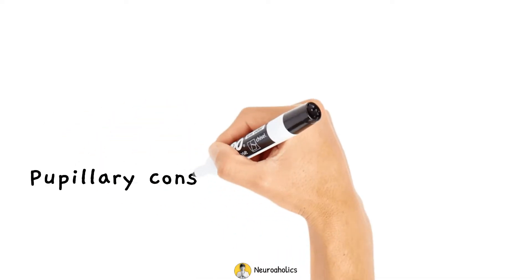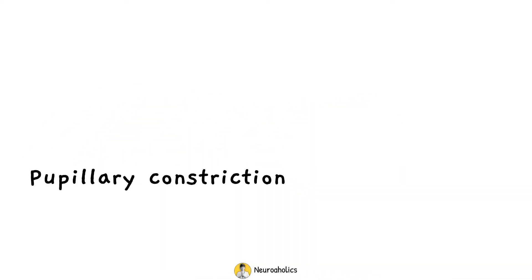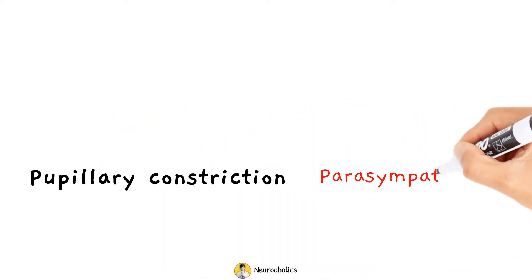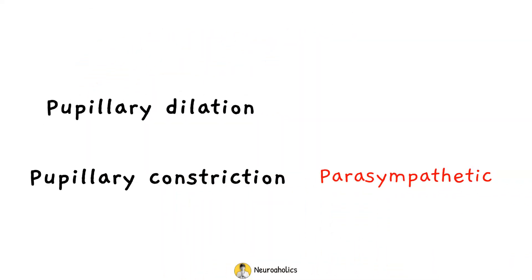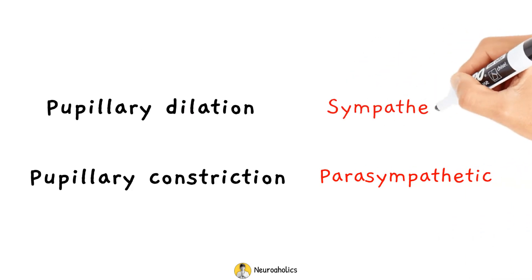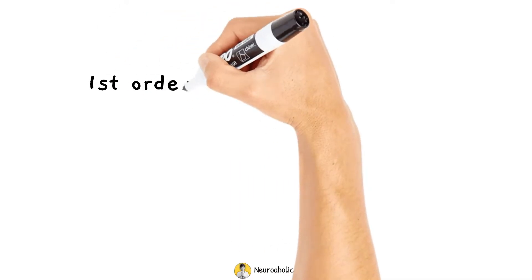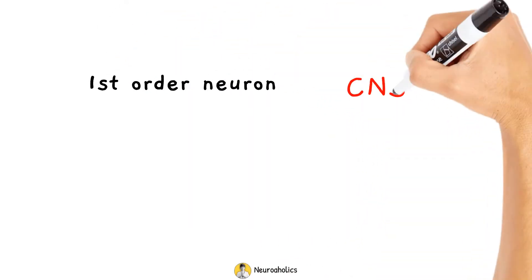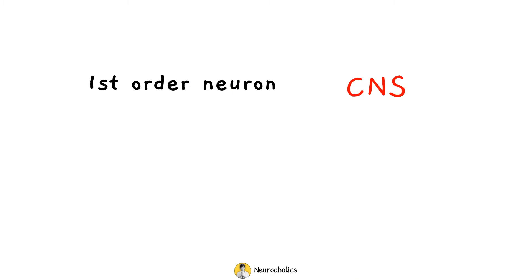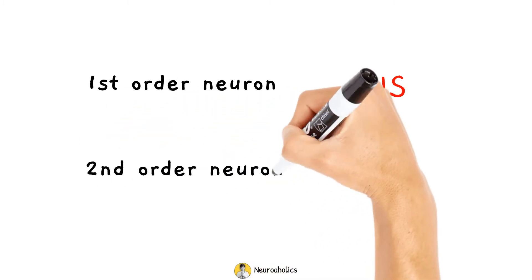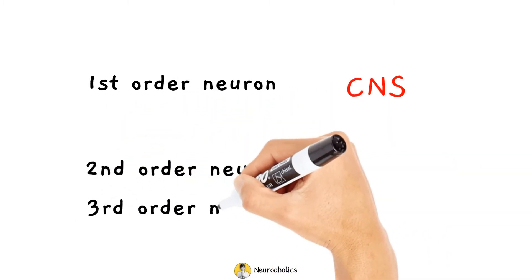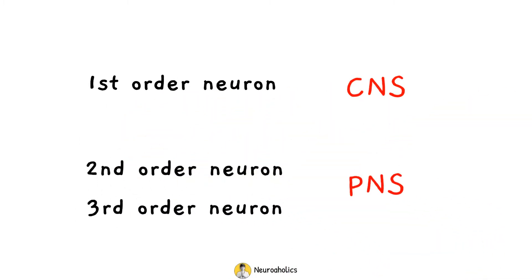In contrast to the pupillary constriction pathway, which is parasympathetic, this pathway is controlled by the sympathetic nervous system. The first-order neuron is found in the central nervous system. The second and third-order neurons are found in the peripheral nervous system.